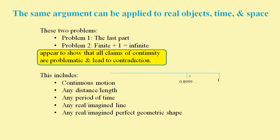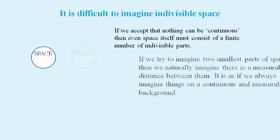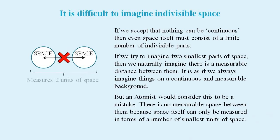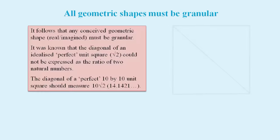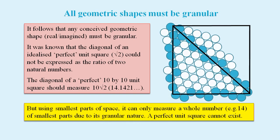By this argument, even space itself has to be granular in nature. But if we try to imagine two smallest indivisible parts of space, then we automatically think of them as having a measurable space between them. We find it difficult to accept that very small distances might only be measurable in terms of a number of smallest units of space. Also, any conceived geometric shape must be granular. So a perfect unit square cannot exist. Similarly, any conceived circle must be granular. So a perfect circle cannot exist.